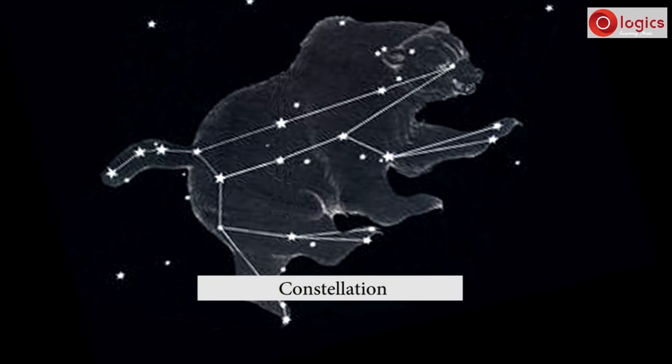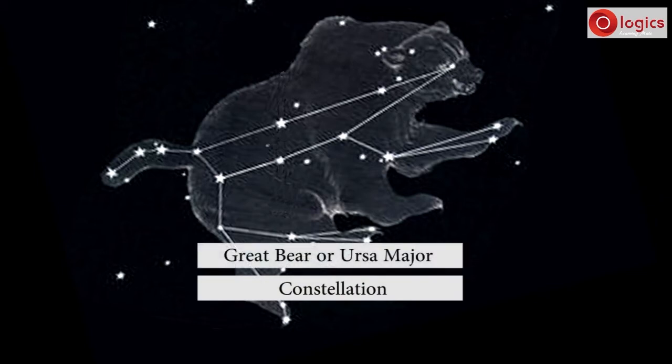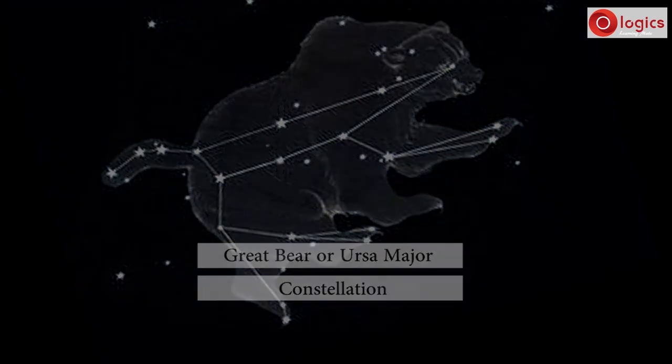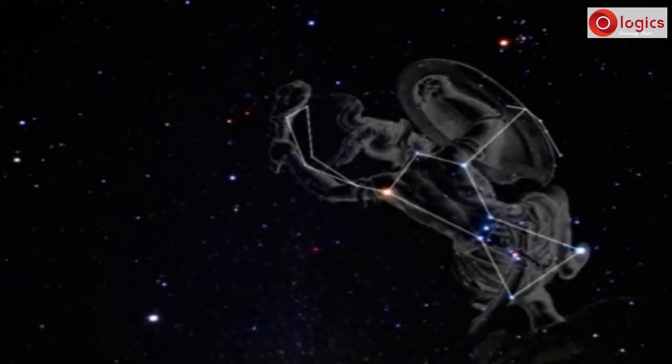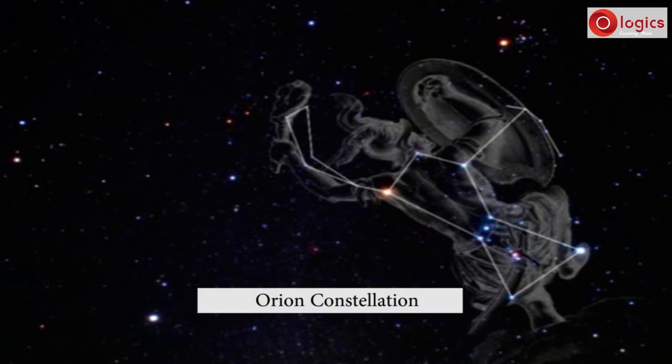Here this constellation is called Great Bear or Ursa Major. Similarly, another group of stars in different parts of the sky are named as different constellations. About 88 constellations are known so far.